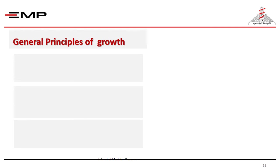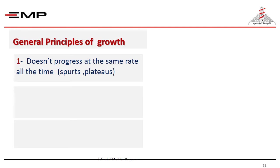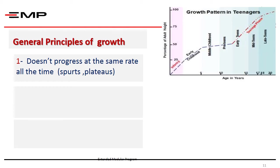There are general principles concerning growth that you should keep in mind. First, growth doesn't progress at the same rate all the time. If you look at this figure, you will see that there is a very high growth rate in the first year of life, which is the infantile spurt, then growth continues but at a slower rate till the age of five, when there is a plateau of growth, till the age of puberty, when there is another growth spurt to reach determined adult height.